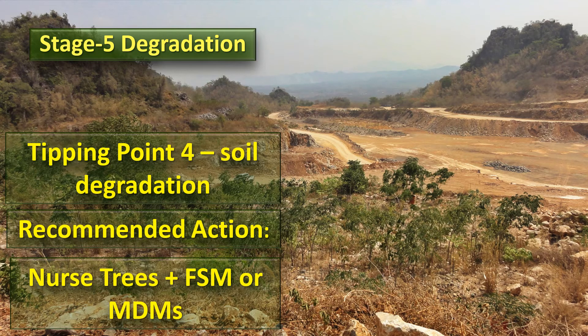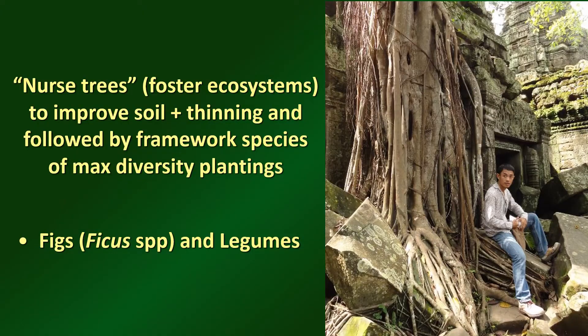The next tipping point is reached when the soil becomes so degraded it becomes almost impossible to plant most tree species. The treatment for these sites is to plant what we call nurse tree species that function to improve the soil ecosystem before planting other species. We recommend two groups of trees as nurse trees: one to take care of substrate structure, and the other to take care of substrate nutrient levels. The first are figs, with their expansive root systems that push apart blocks of substrate, opening channels for water and oxygen to feed the roots of other trees. Legumes fix nitrogen and can greatly improve the nutrient status of the substrate.